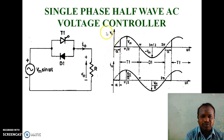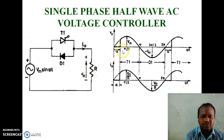Here, V0 is the output voltage and I0 is the output current. Both are in phase because of the resistive load. The positive half-cycles are controlled and the negative half-cycles are uncontrolled.